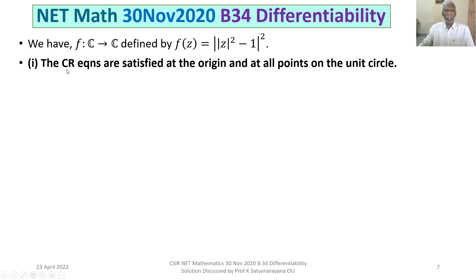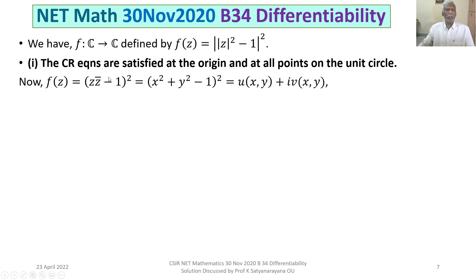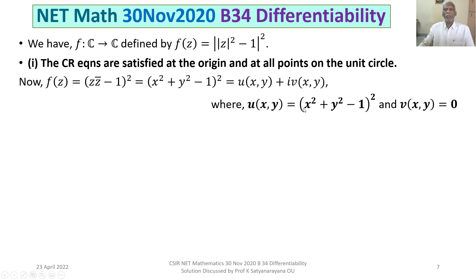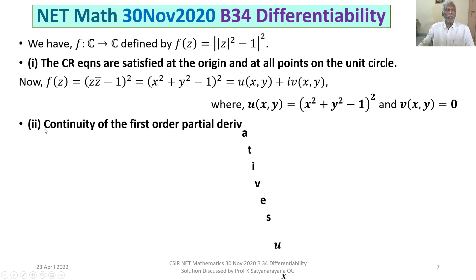So in case 1, the Cauchy-Riemann equations are satisfied at the origin and at all points on the unit circle. Now, f(z) = (z·z̄ - 1)² = (x² + y² - 1)². We write this as u(x, y) + i·v(x, y), where u(x, y) = (x² + y² - 1)² and v(x, y) = 0 for all x, y.